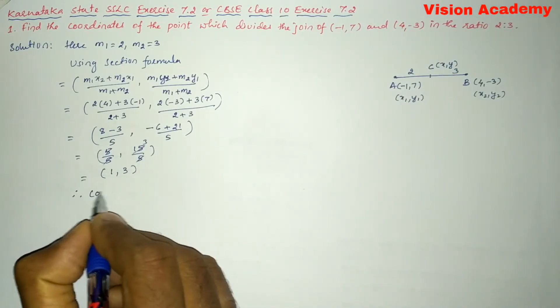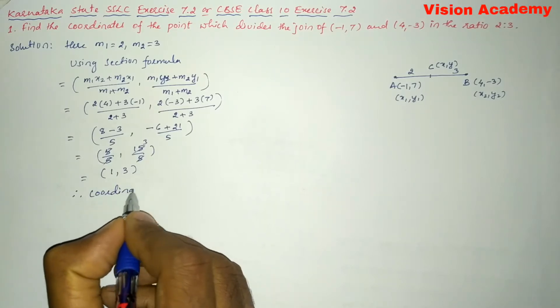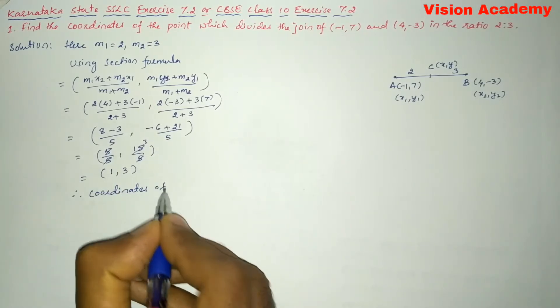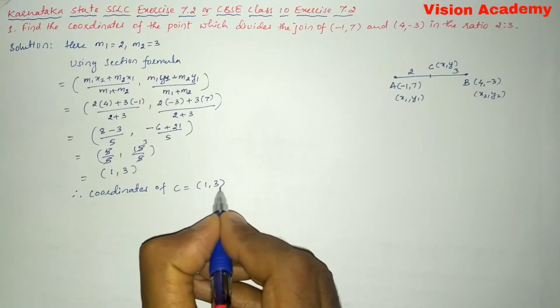Therefore, coordinates of C is equal to (1, 3).